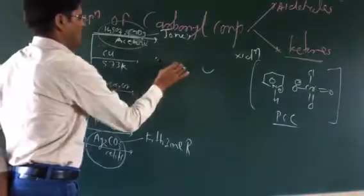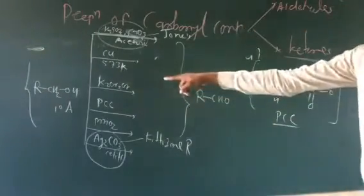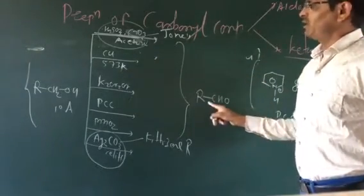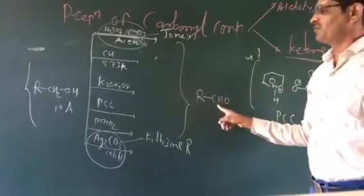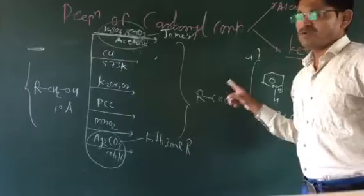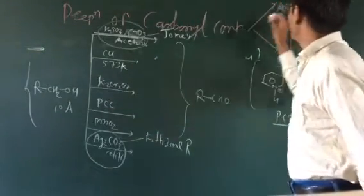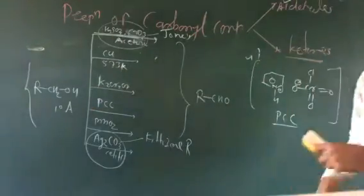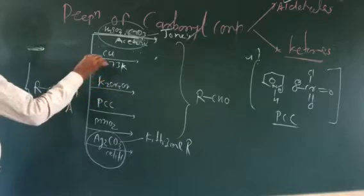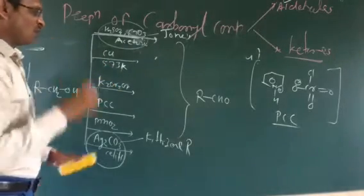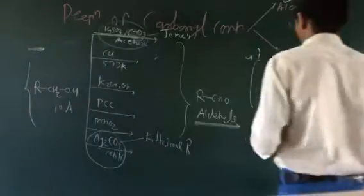When a primary alcohol is used, all these reagents give an aldehyde. So these oxidizing reagents — Jones reagent, Fetizon reagent, MnO2, PCC, potassium dichromate, chromium trioxide, and copper — are used to convert primary alcohol to aldehyde.